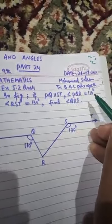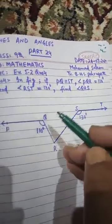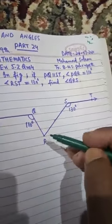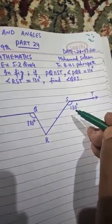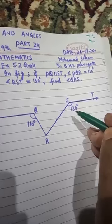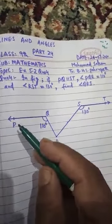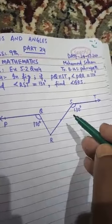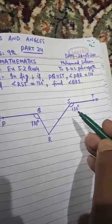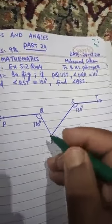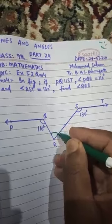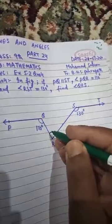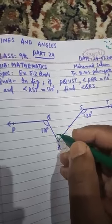Also, angle PQR is equal to 110 degrees — here it is, angle PQR is 110 degrees. And angle RST is equal to 130 degrees. Three things are given: PQ is parallel to ST, angle PQR is 110 degrees, and angle RST is 130 degrees. Now we have to find angle QRS — this is the angle to be found out.